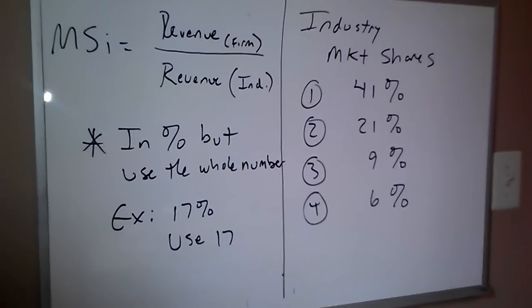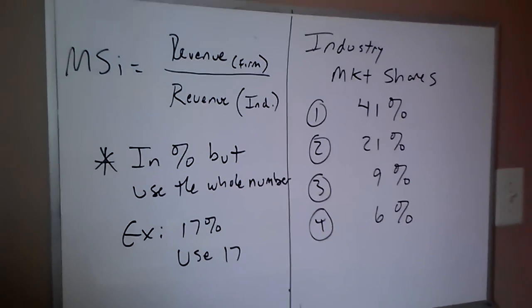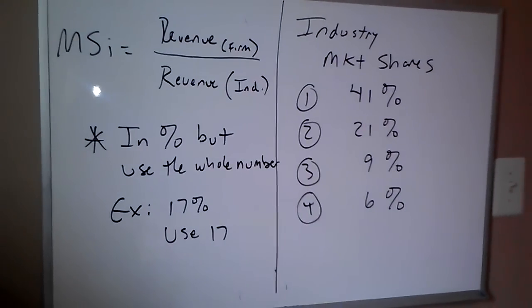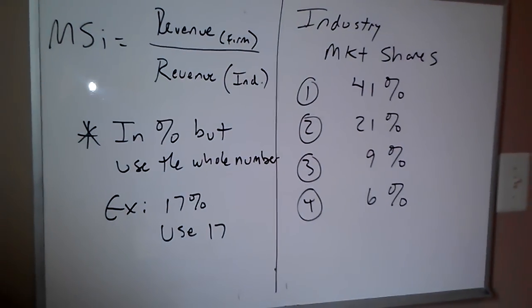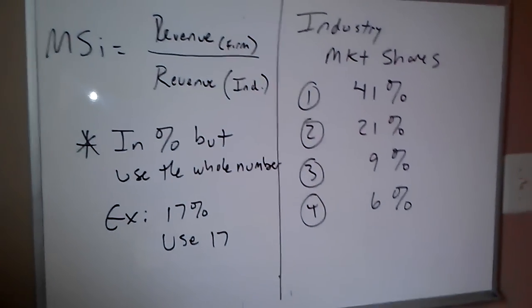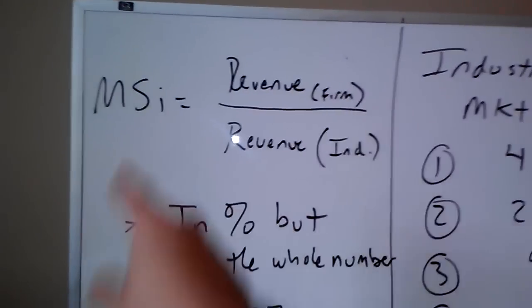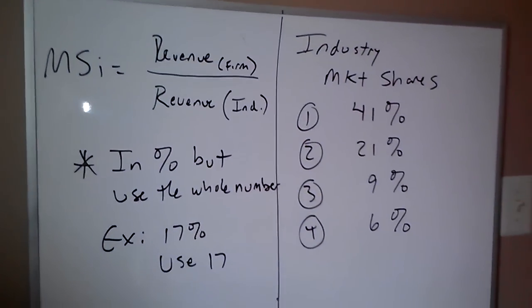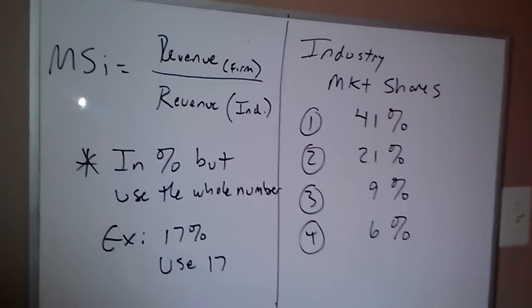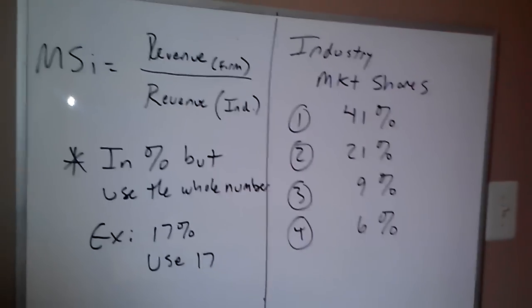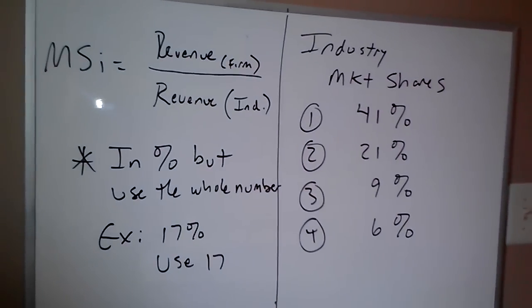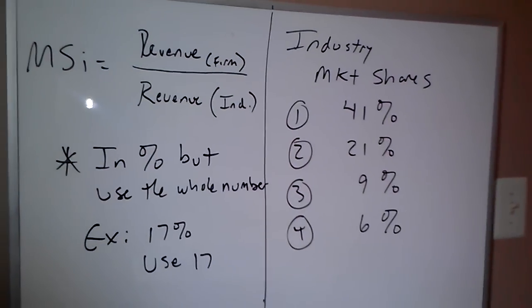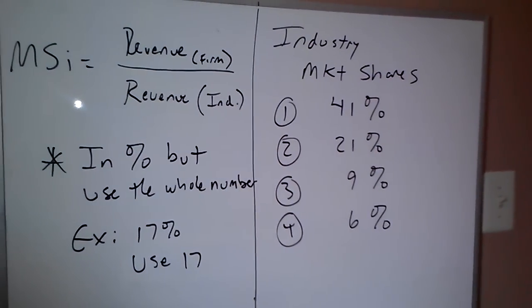How do we figure out the market share? The market share is how much of the industry the company owns or controls. The market share of firm i — where i is just a subscript for each firm — is going to be the revenue of the firm divided by the total revenue of the industry.